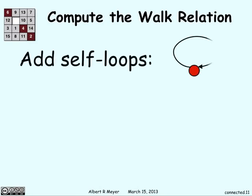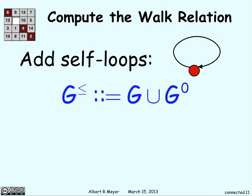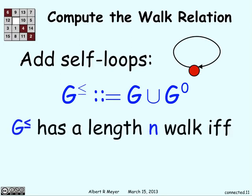If we want to get the walk relation, you just get everything inside the graph and apply self-loops. Add in an edge that points back to itself for every vertex. And we call this G≤. It's basically G and then add in these G^0 self edges.